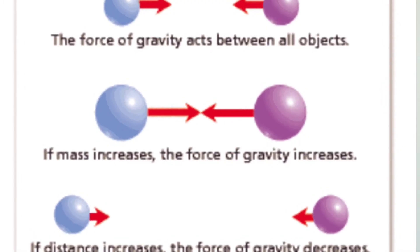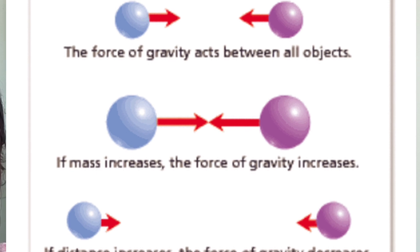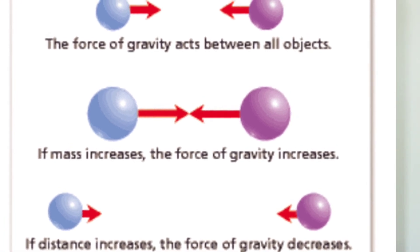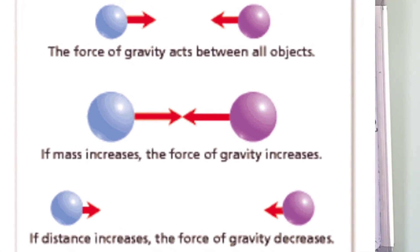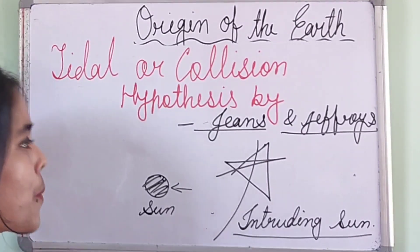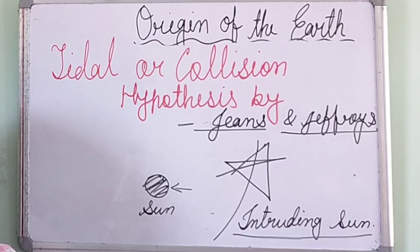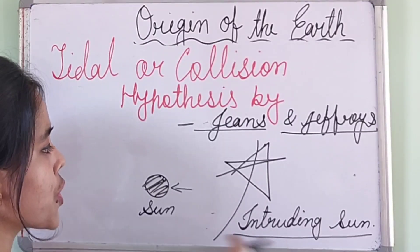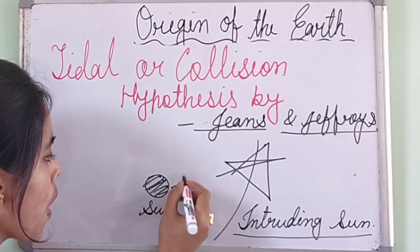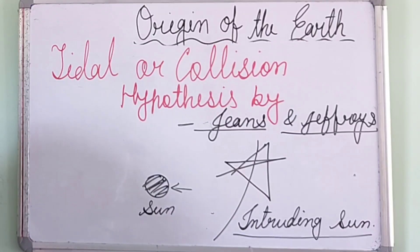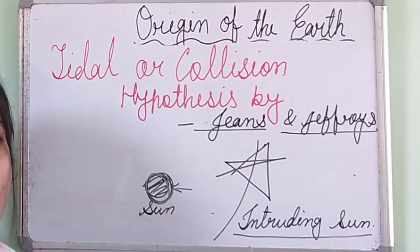When two objects are far apart, their gravitational attraction is not very strong. But when two objects are very close to each other, and one has more mass and weight, the gravitational pull of the bigger object is more and can influence the other object. Here, the intruding sun had more gravitational pull and exerted that gravitational pull over our original sun.